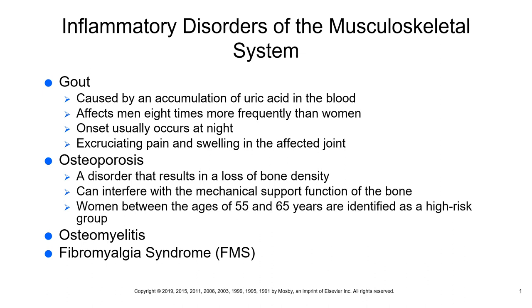Tophi — T-O-P-H-I — is a nodular mass, a mass of uric acid crystals. Tophi can appear in cartilage, tendons, soft tissue, the joints, the skin — all kinds of places. All tophi is is a mass of uric acid crystals.